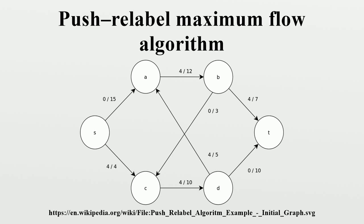The Push-Relabel algorithm introduces the concept of pre-flows. A pre-flow is a function with a definition almost identical to that of a flow, except that it relaxes the flow conservation condition. Instead of requiring strict flow balance at vertices other than S and T, it allows them to carry positive excesses. This means that in a pre-flow, the total flow into a vertex can exceed the flow out of the vertex. A vertex is called active if it carries positive excess.